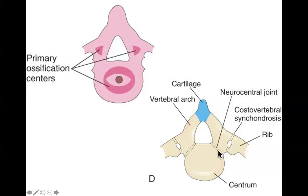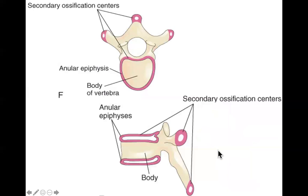The secondary ossification centers do not show up until around puberty — write that down, it might be on a quiz. The parts that remain pink stay cartilage to allow for further growth, because these vertebral bodies are going to have to get taller, and the spinous processes and transverse processes are going to need to get longer throughout this child's life until adulthood. Then they fully fuse in the early twenties for guys, a little bit sooner for girls.